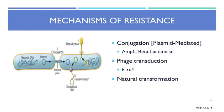These are the basic mechanisms of resistance transfer: conjugation, similar to plasmid-mediated AmpC beta-lactamases, where plasmids transfer directly between cells; phage transduction, where a bacteriophage carries DNA to bacteria; and natural transformation, where DNA released from a dying bacterial cell is taken up by another. These are not all-encompassing but represent the basic ways resistance can spread.